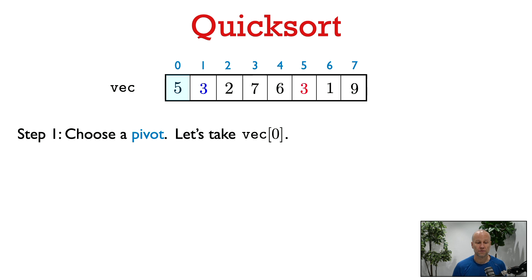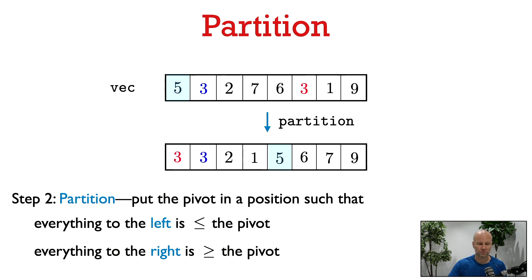The first thing QuickSort does is choose an element of the vector to serve as a pivot. For simplicity, let's choose the first element of the vector to be the pivot. In the second step, we put the pivot into a position such that all elements to its left are less than or equal to it, and all elements to its right are greater than or equal to it.